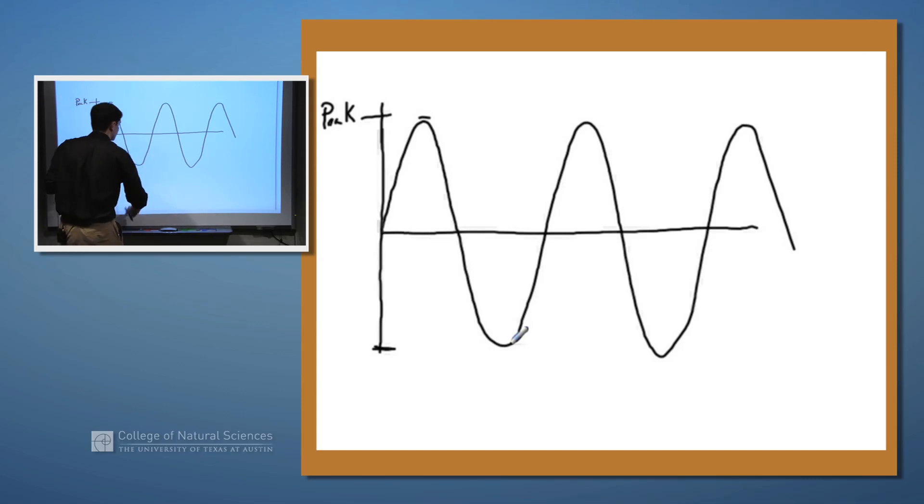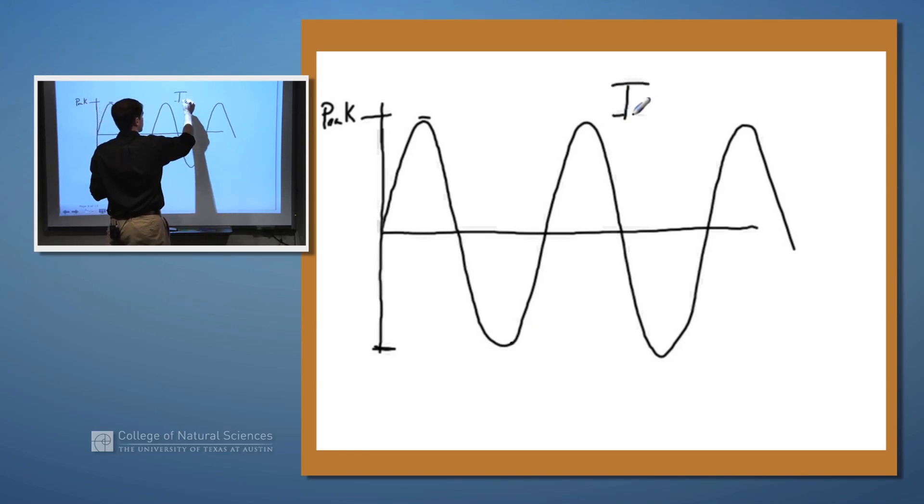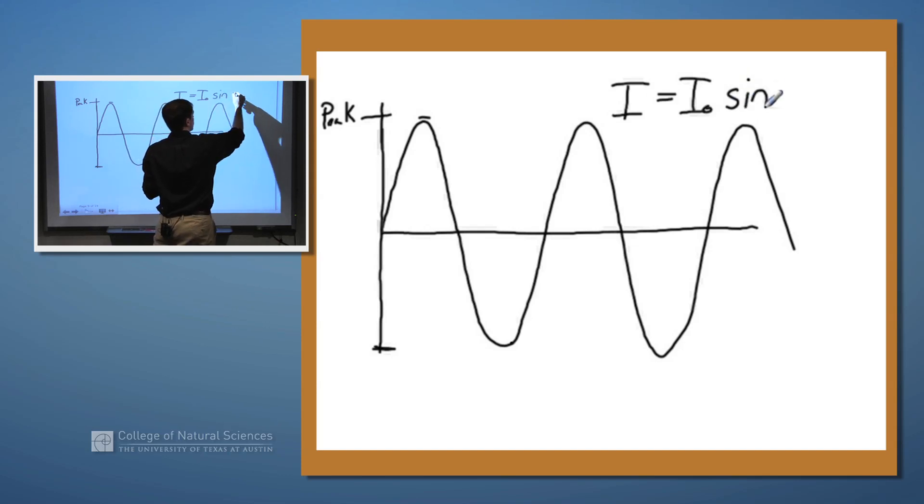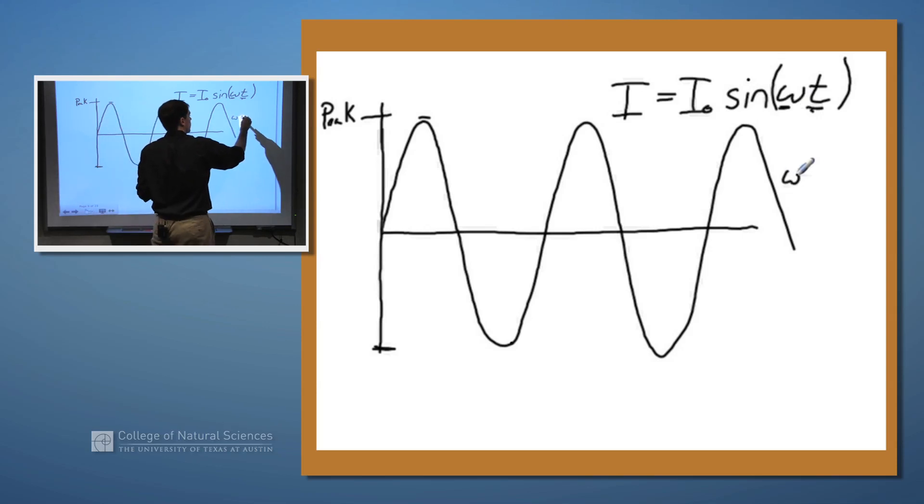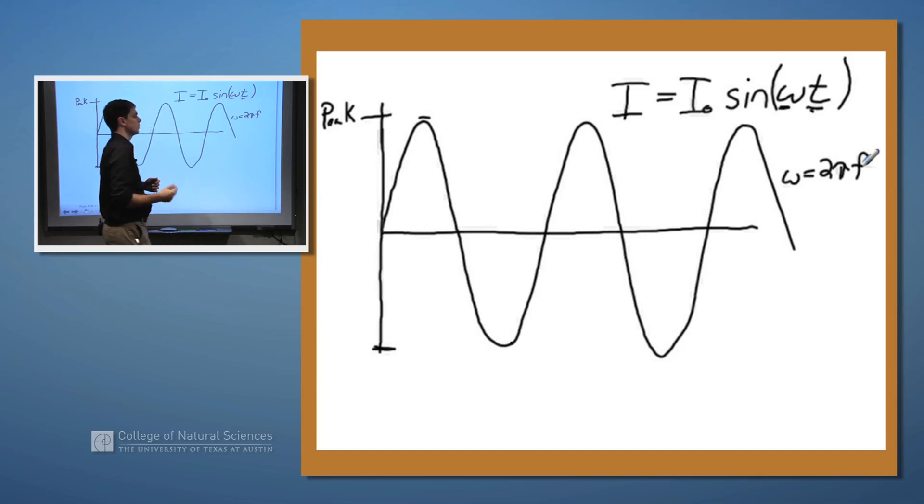The standard version that we get for, say, the current, a similar thing for voltage, is that the current at any point in time is going to be given by the peak current, I-naught, times the sine of omega-t, where omega-t is time multiplied by our angular frequency. Sometimes you'll see that omega is equal to 2π times the frequency. So if we look at our wall outlet, a wall outlet is at 60 hertz. The value of 60 hertz is the value that we get for F. So we can get a corresponding value for omega and figure out our equation for the current.